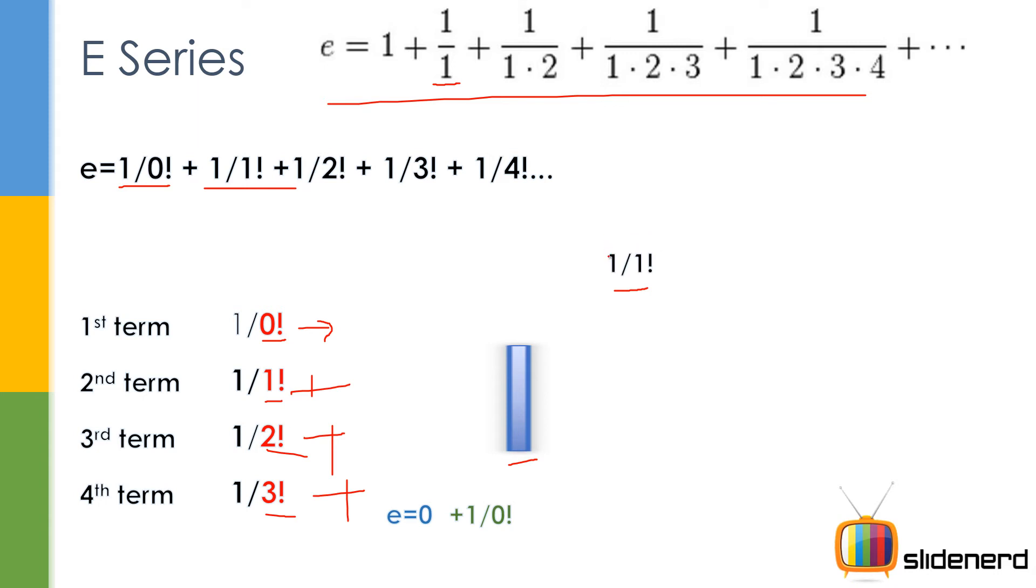Then I have 1/1!, I put that inside. It further grows to give you 0 plus 1/0! plus 1/1!. Then you have 1/2!, put that inside. It grows further and this way e is calculated.